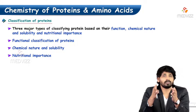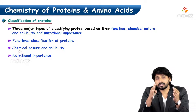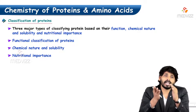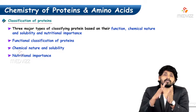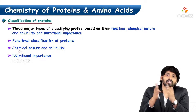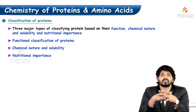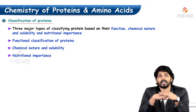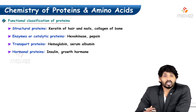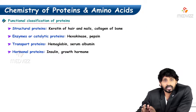We all know proteins are made up of amino acids. There are 10 essential amino acids. One protein may contain all 10 essential amino acids, while some proteins may not contain all of them. Based on this variation, proteins are again classified from a nutritional importance aspect. First, in functional classification, we have structural proteins.